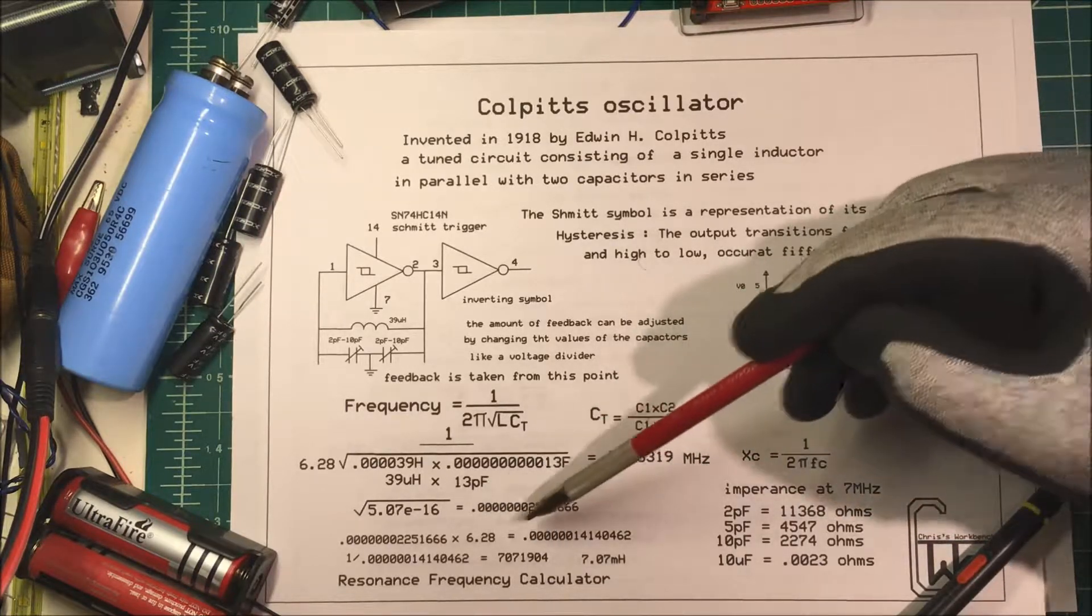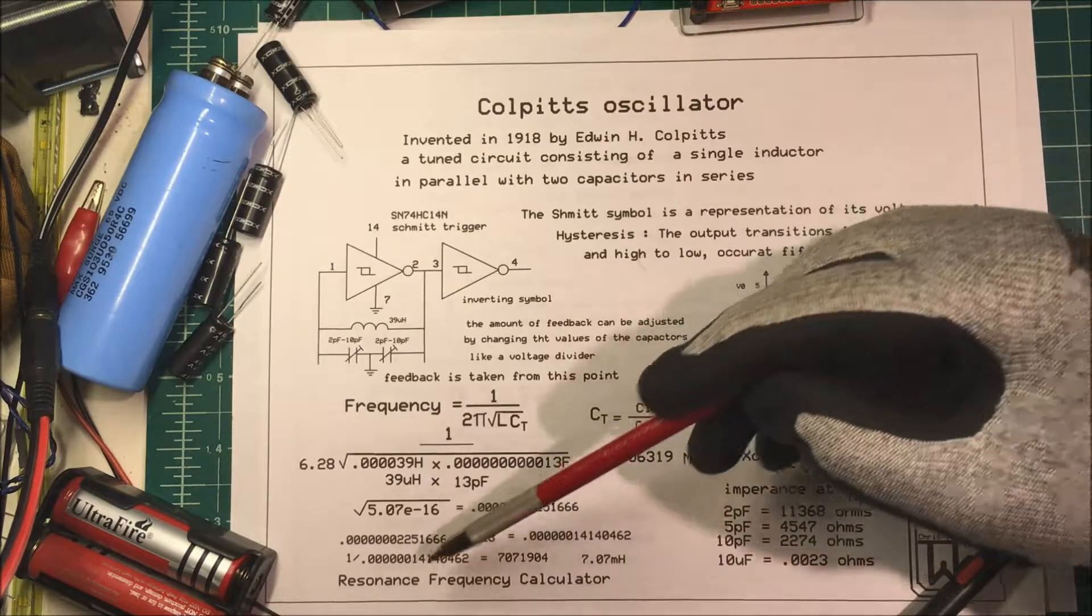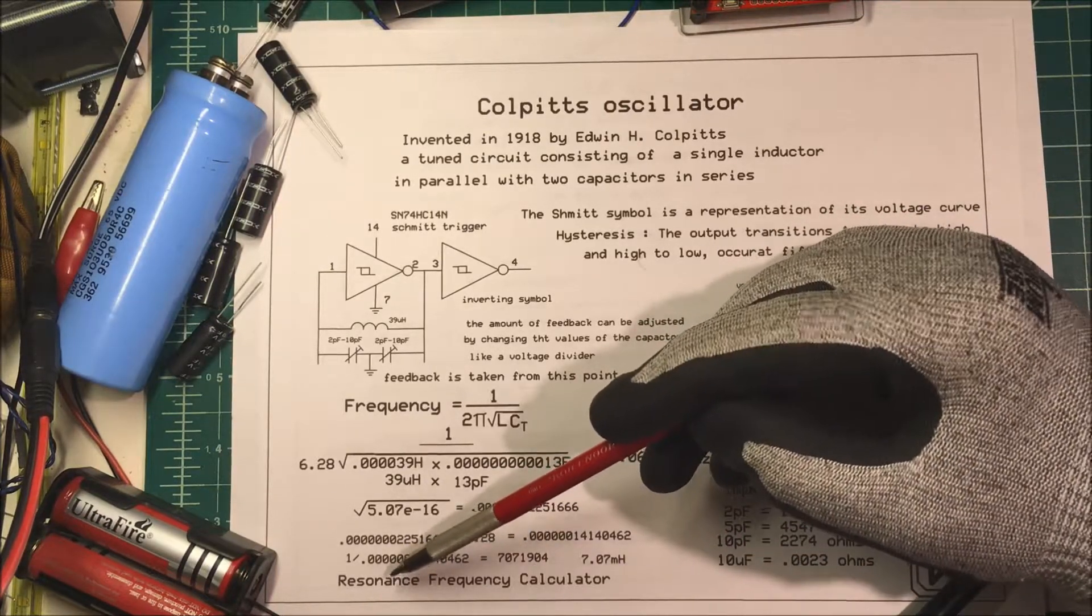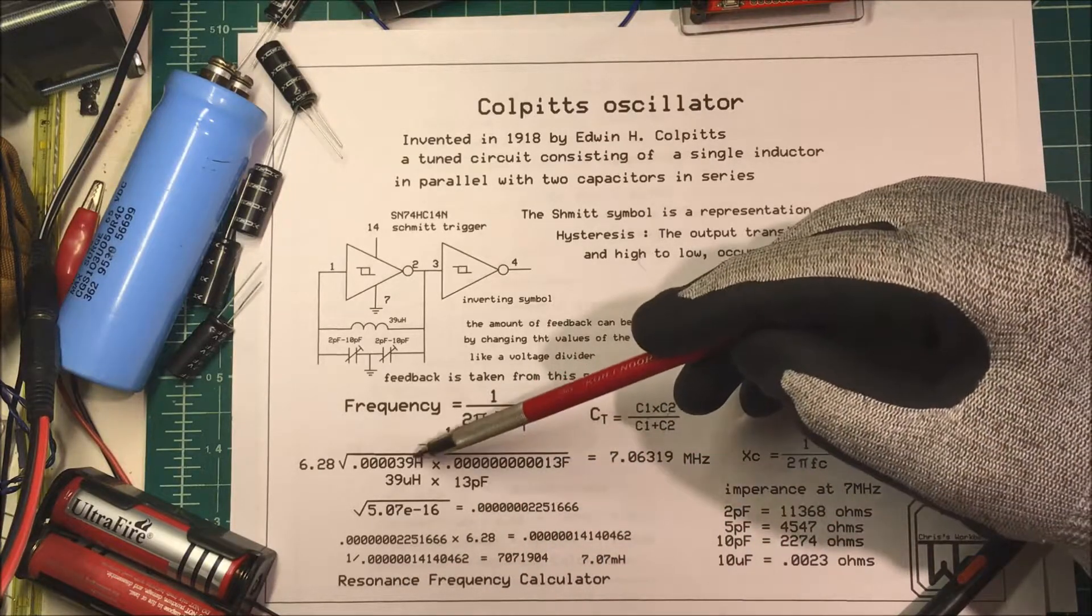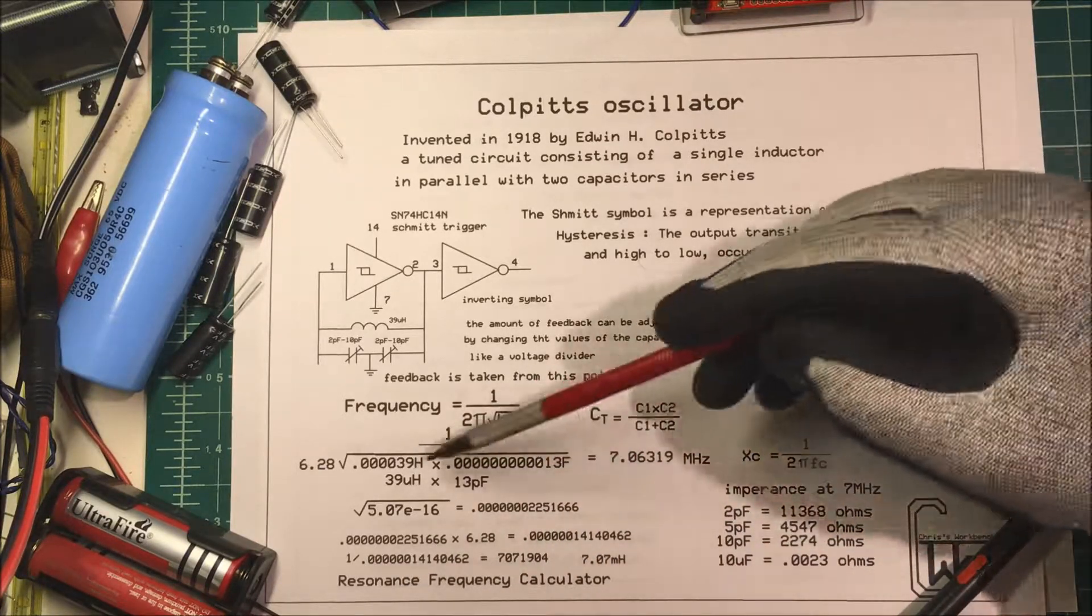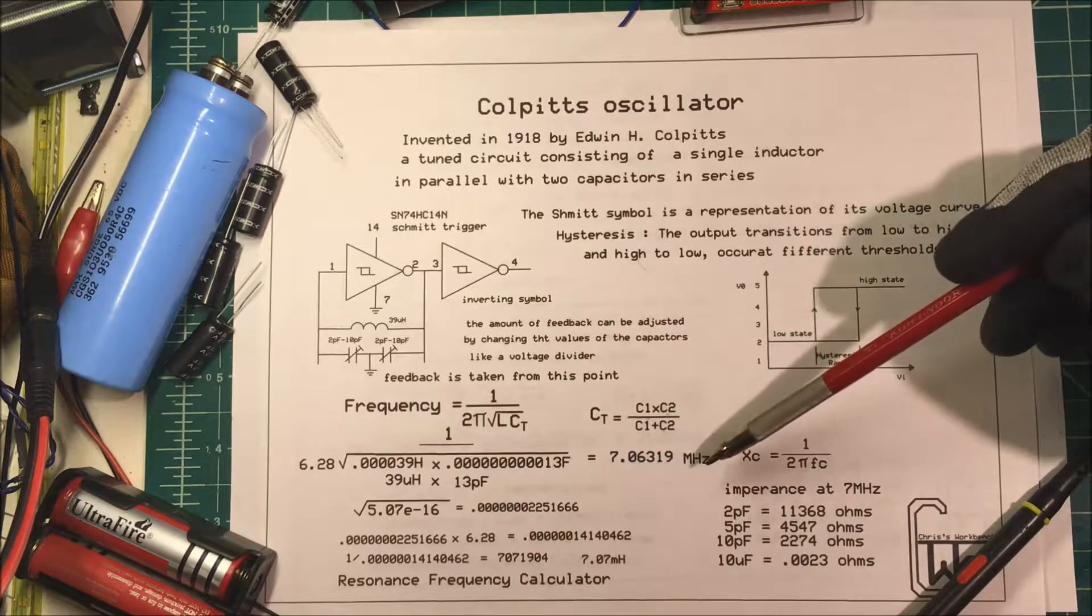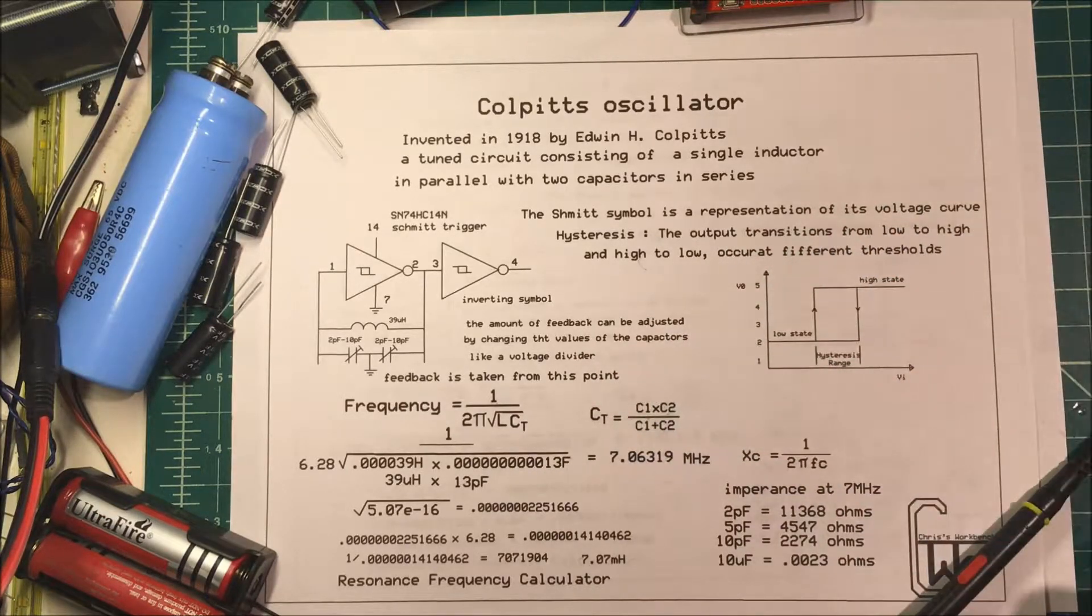Now you can do this on your calculator but the easiest thing to do is just to google up a resonance frequency calculator and then you can play with it just by putting in different numbers to come up to the megahertz that you want. So we're going for 7 megahertz.